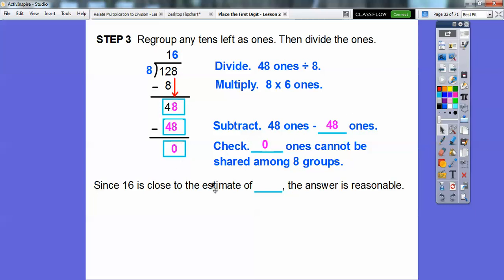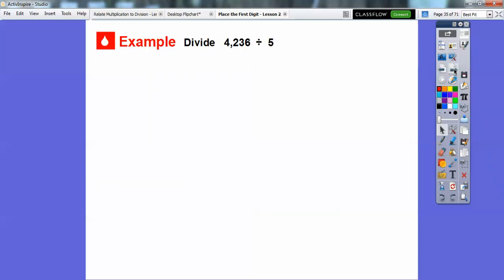so 16 is close to our estimate. Do you remember what our estimate was? It was 20, so it's close to our estimate. Let's always answer the question in the context of the problem. This is talking about crayons. So there are 16 crayons in each box that Tammy had.